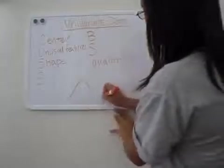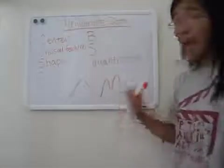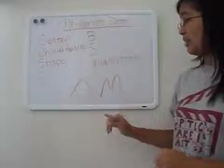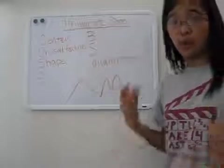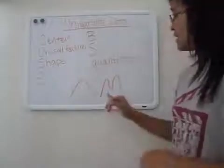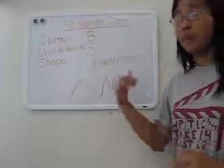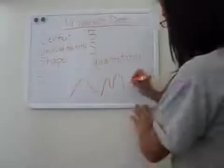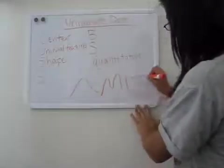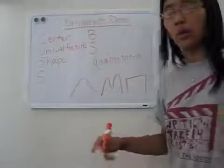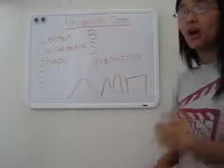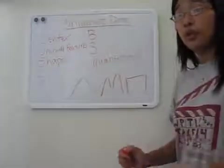Another example graph looks kind of like an M, which means there are two modes — two numbers that show up most often. Therefore it would be called bimodal, bi meaning two. The last type of graph is one that looks either like a rectangle or a square, and these are called uniform graphs — the distribution of all the numbers is generally the same.